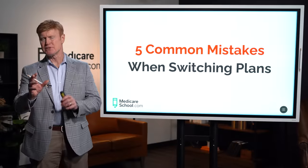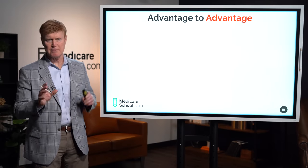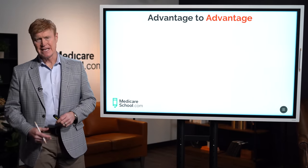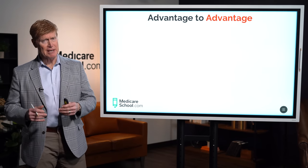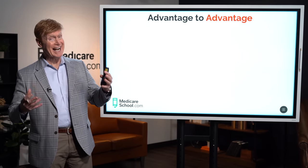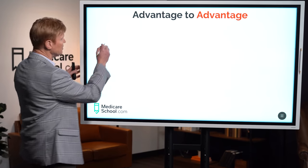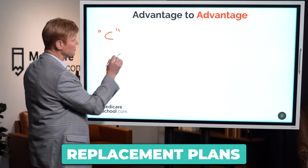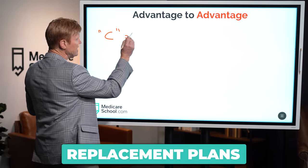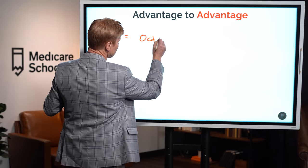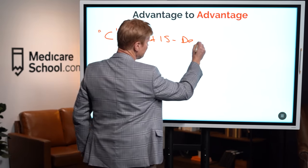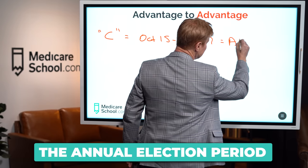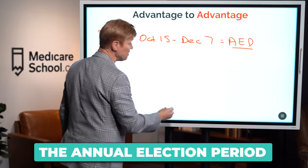The first mistake happens when people are switching from one advantage plan to another advantage plan. There are just a couple of times a year when you can actually switch advantage to advantage. Advantage plans are also called C plans or replacement plans. C plans can be switched between October 15th and December 7th of every year — we call this the annual election period or annual enrollment period.